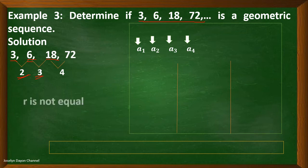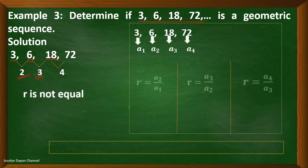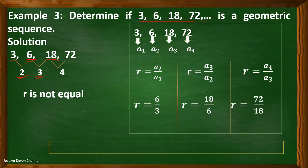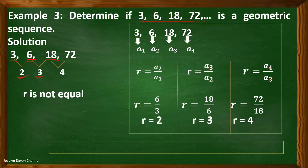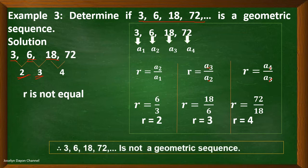For our detailed solution: the formula for finding the common ratio is a₂ divided by a₁, or a₃ divided by a₂, or a₄ divided by a₃. By substitution, they have different ratios: 6 divided by 3 is 2; 18 divided by 6 is 3; and 72 divided by 18 is 4. That is why the given sequence is not geometric.